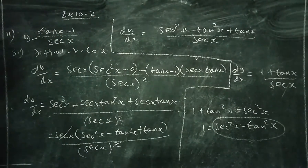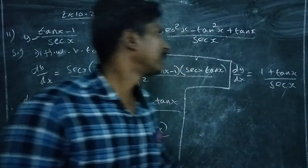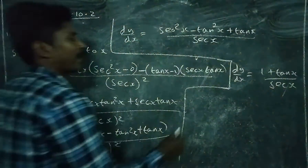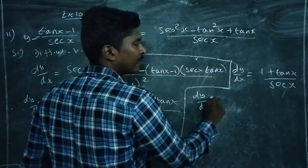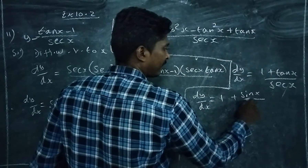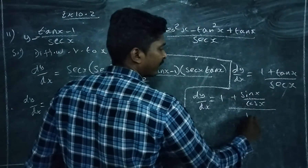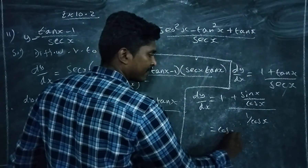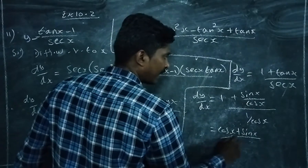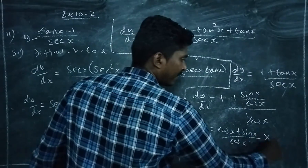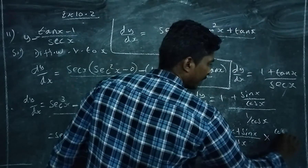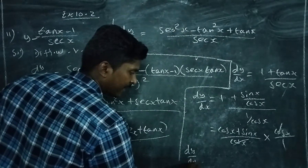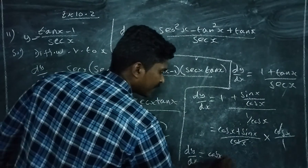Now convert tan x into sin x over cos x. So dy by dx equals 1 plus sin x by cos x, divided by sec x, which is 1 over cos x. Multiply through: cos x plus sin x over cos x, then take the reciprocal, and cos x cancels. Finally, dy by dx equals cos x plus sin x.